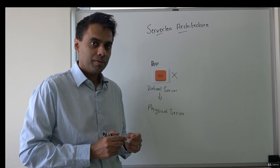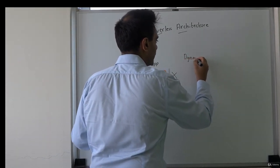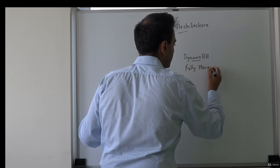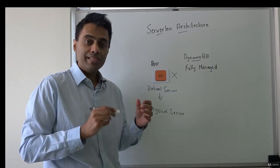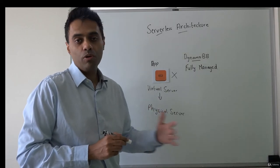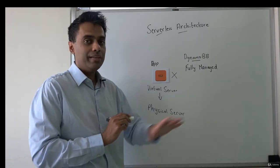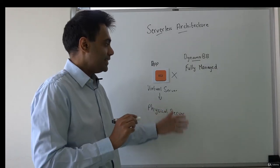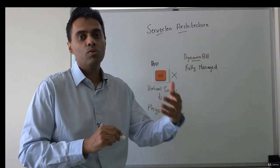Just to give you an example — in an earlier chapter, we have seen a database known as DynamoDB. DynamoDB is a fully managed NoSQL database. What is the meaning of fully managed? Remember when we worked with DynamoDB, we started directly by creating a table — we didn't have to install a software, we didn't have to spin up a virtual server, nothing. Everything is taken care by AWS. We don't even have to worry about the virtual server, high availability, fault tolerance, nothing. Everything is taken care by AWS. All you have to do is start working with the service.